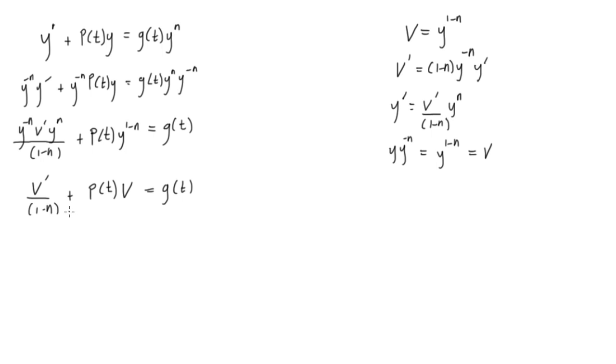Okay, so one last thing that we want to do here is multiply every term by 1 minus n, so we'll get v prime plus 1 minus n times p of t times v is equal to 1 minus n times g of t.